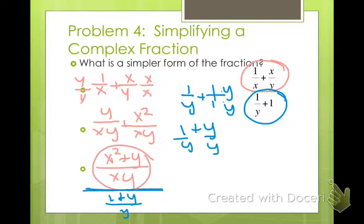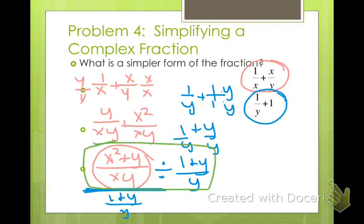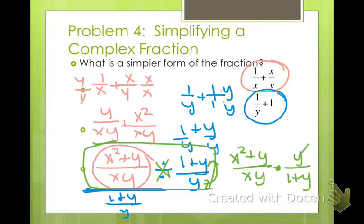Now, I already said a fraction is just a glorified division problem. So I'm going to rewrite this as a division: (x²+y)/(xy) divided by (1+y)/y. What do we say we did with division problems? We change them into multiplication. We multiply by the reciprocal. So I have (x²+y)/(xy) times y/(1+y). Well, I have a y here and a y here that I can cancel. I can't cancel anything else. So my answer is (x²+y)/(x+xy). Do I have any restrictions? x and y can't be 0. And that's about it.